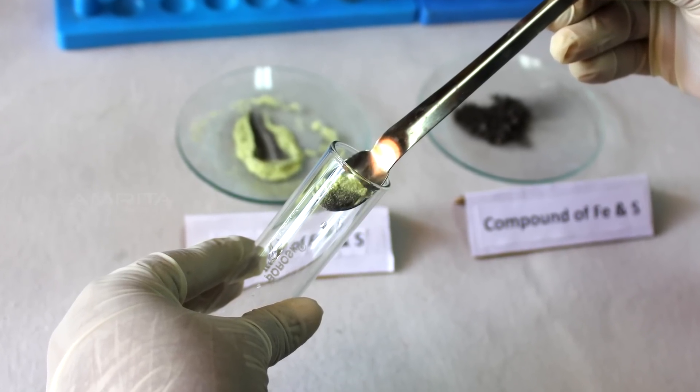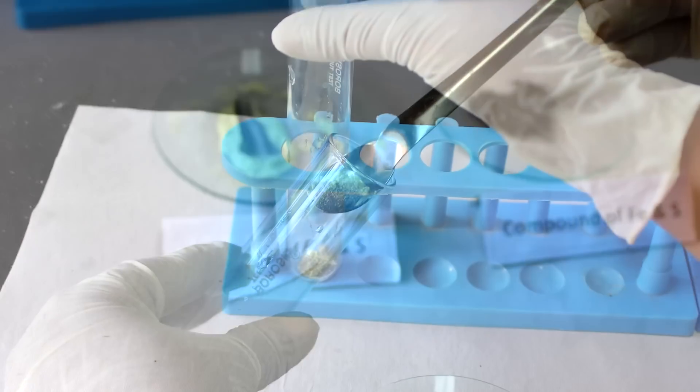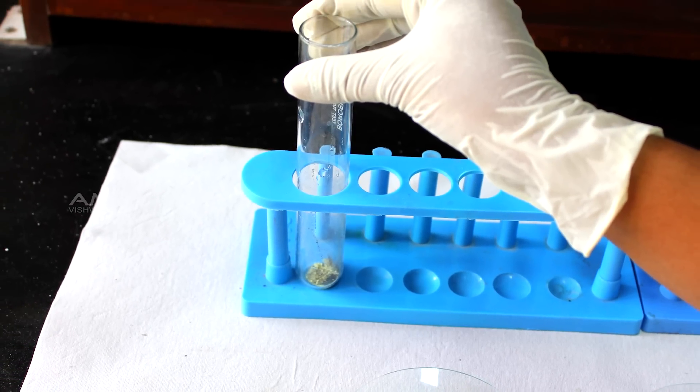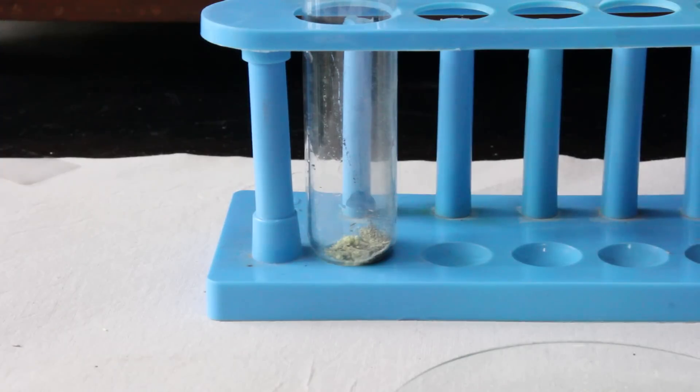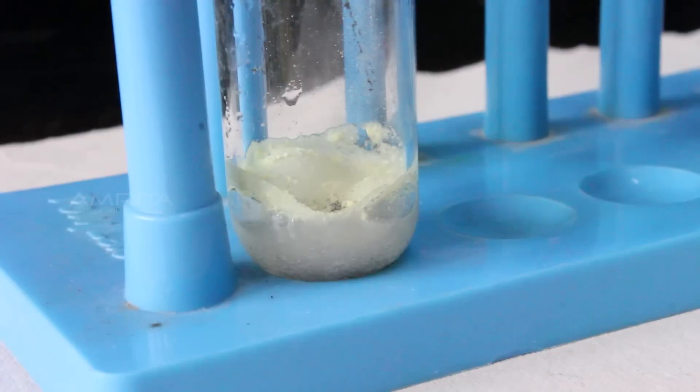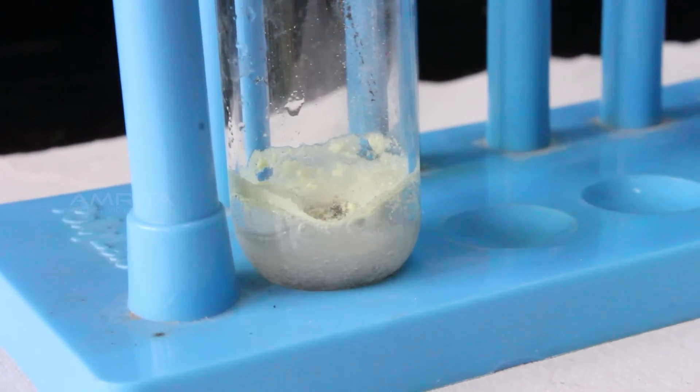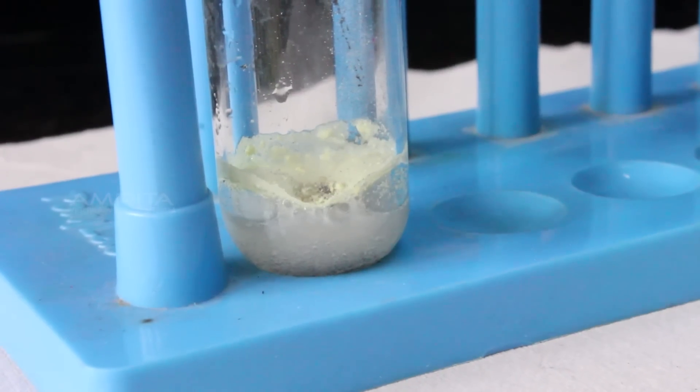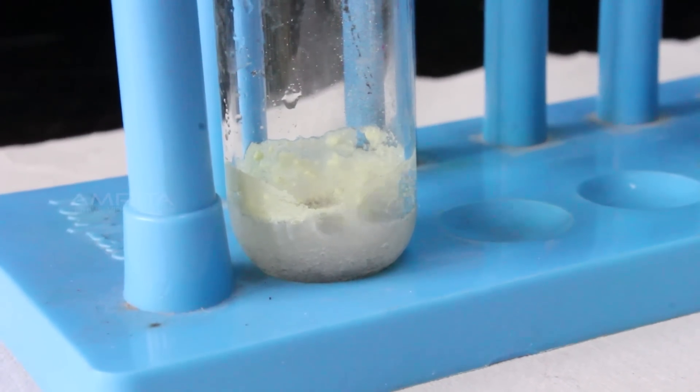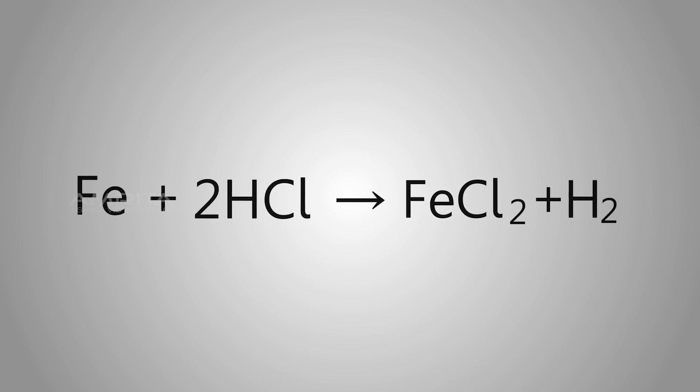Now, transfer a small quantity of the mixture to a boiling tube and place it in the test tube rack. Add a few drops of dilute HCl using a dropper. We can see the evolution of gas bubbles which indicates that iron reacts with dilute HCl and forms hydrogen gas. Fe plus 2HCl gives you FeCl2 plus H2.